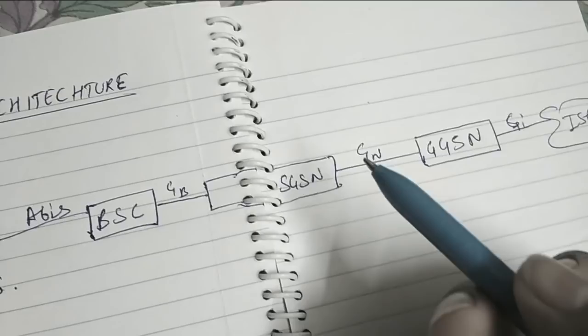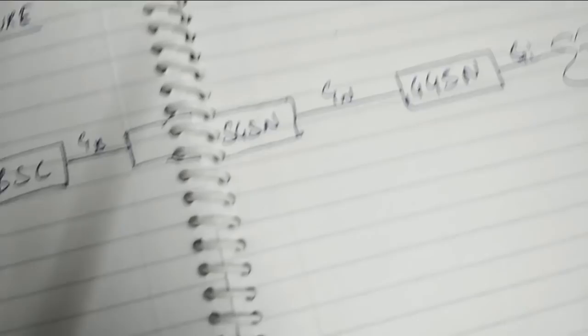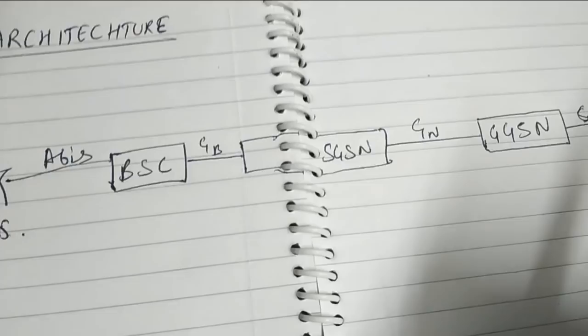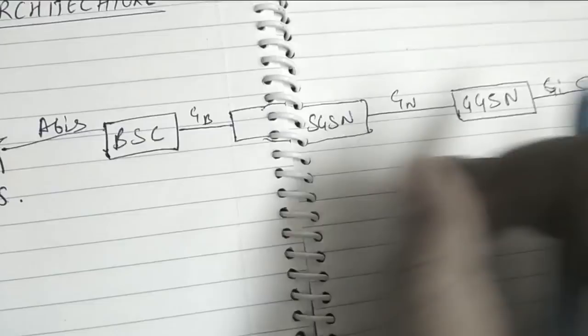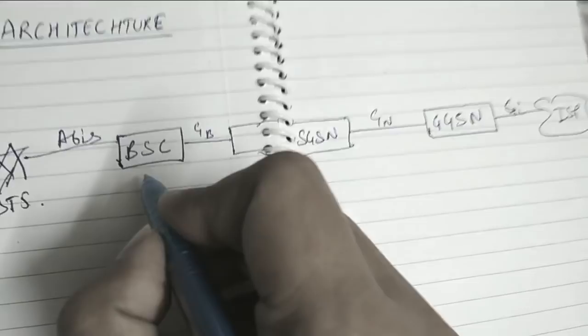We will talk about the Packet Core Part as well as the Circuit Core Part all together. Now let's discuss, this is our basic Packet Core Backbone Network. Now let's discuss about the Circuit Core Part also.